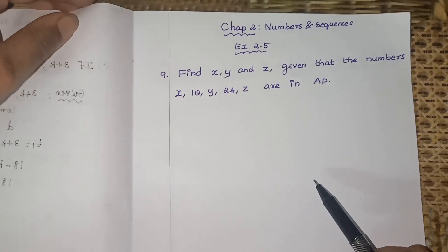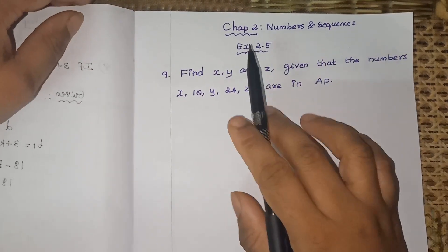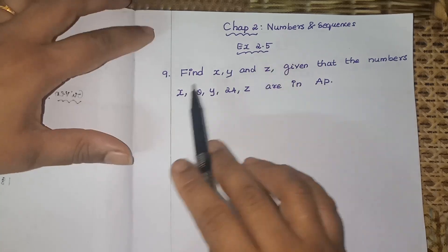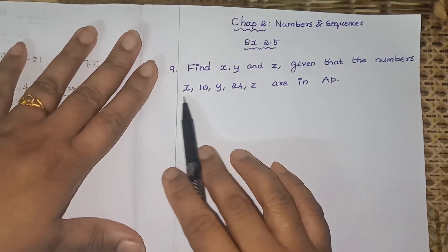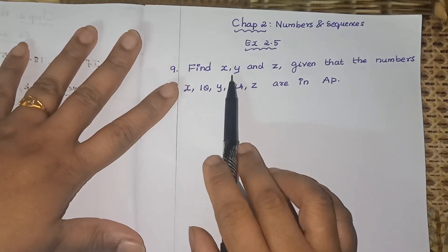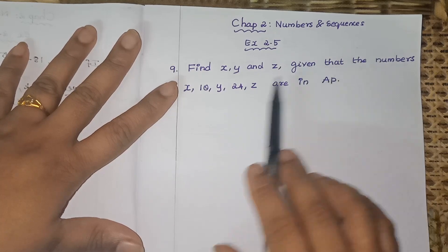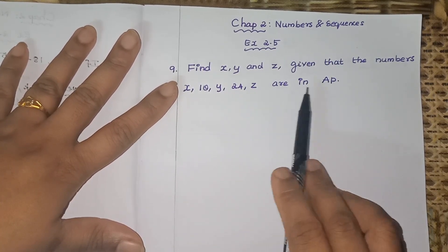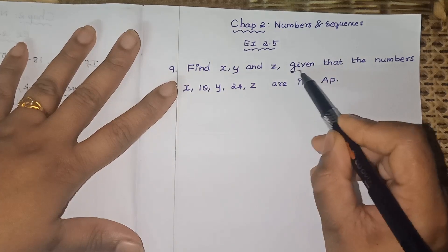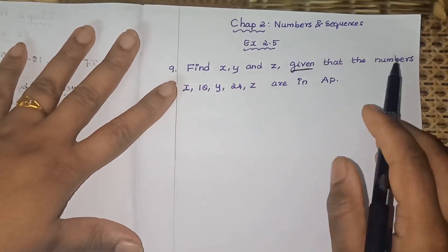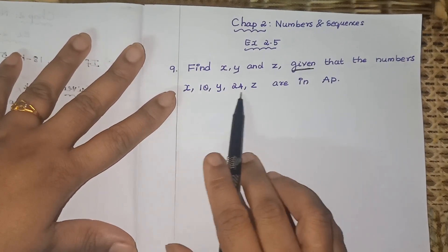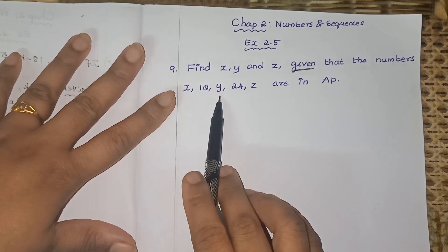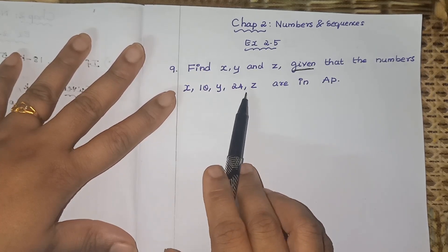Welcome to the lawmax channel. Today we are doing Chapter 2, Numbers and Sequences — Exercise 2.5, ninth sum. This is a very important sum. Find x, y, and z given that the numbers x, 10, y, 24, z are in AP. We have five terms: t1, t2, t3, t4, t5.